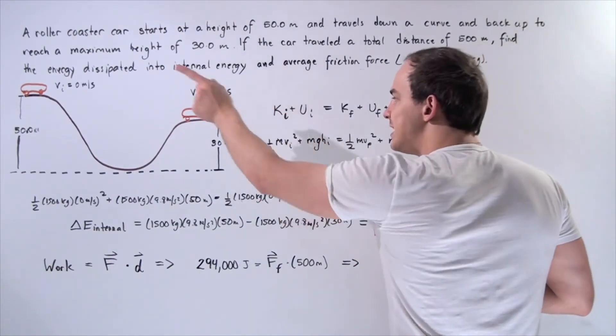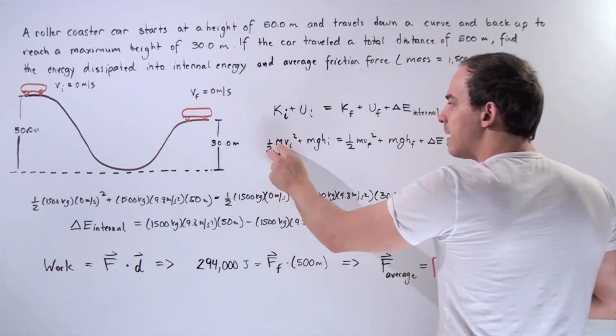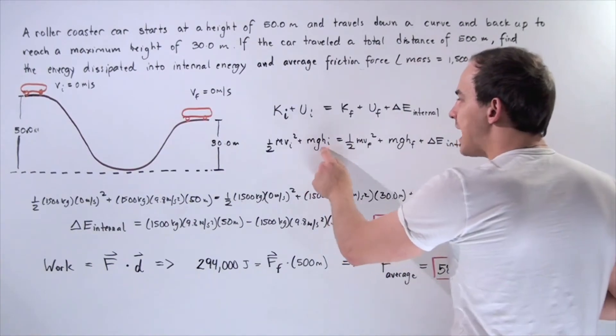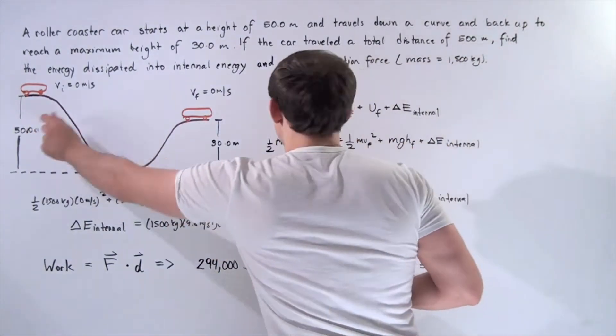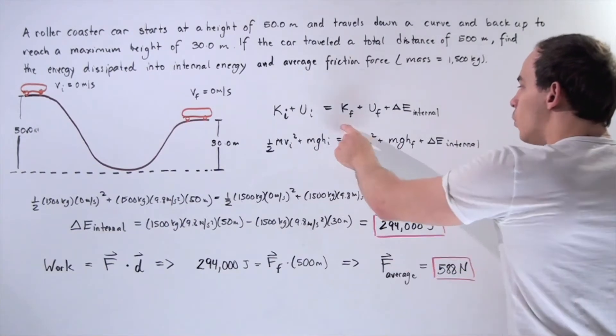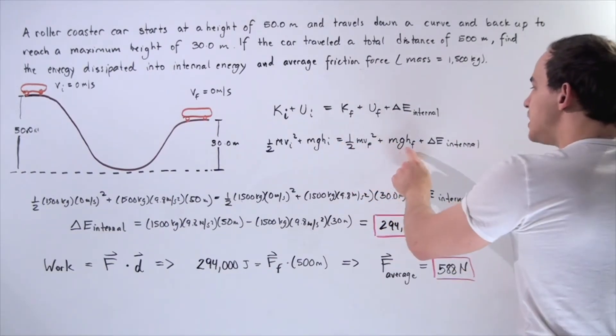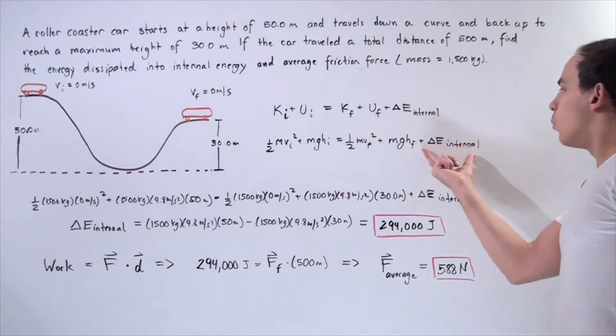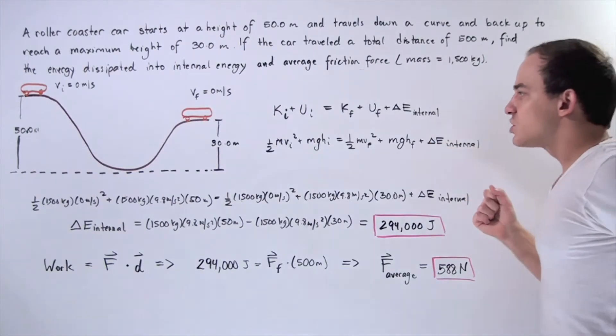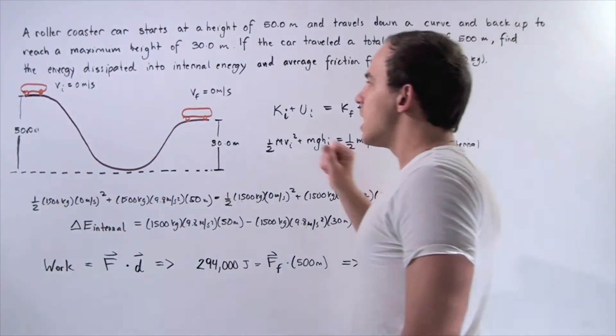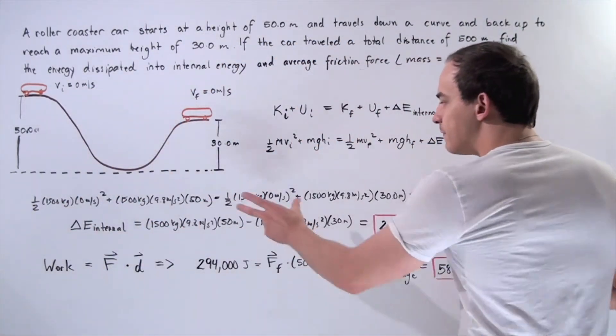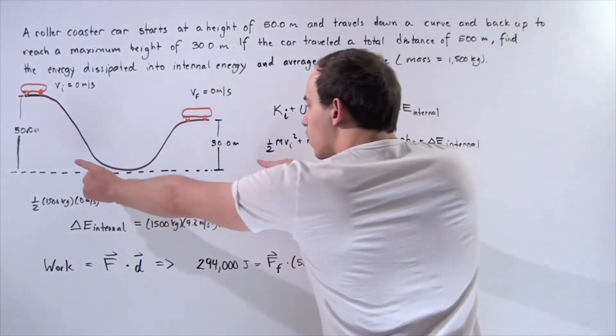Our kinetic energy initial becomes 1/2 mv_initial squared. Our initial gravitational potential energy becomes mgh_i squared, where h_i is 50 meters, equals 1/2 mv_final squared plus mgh_final, where h_final is 30 meters, plus the change in our thermal energy. Notice v_initial and v_final are zero meters each, so our initial kinetic energy and the final kinetic energy are both zero.